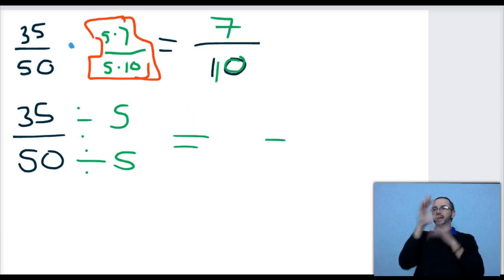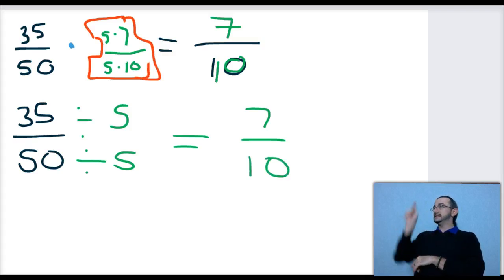5 divided into 35 is 7. 5 divided into 50 is 10. These are two methods. Both methods work great. You pick one. I don't care.